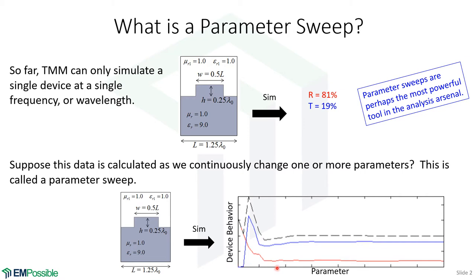Along the horizontal axis is the parameter you're sweeping. Most often this is frequency or wavelength, which are somewhat interchangeable, but it could also be a device dimension, refractive index, permittivity, or something else. We then plot the device response as a function of this parameter as it's being changed. The ability to do this is an incredibly powerful tool, but it requires a slight modification to our transfer matrix method — though really what we're talking about applies to any numerical method.